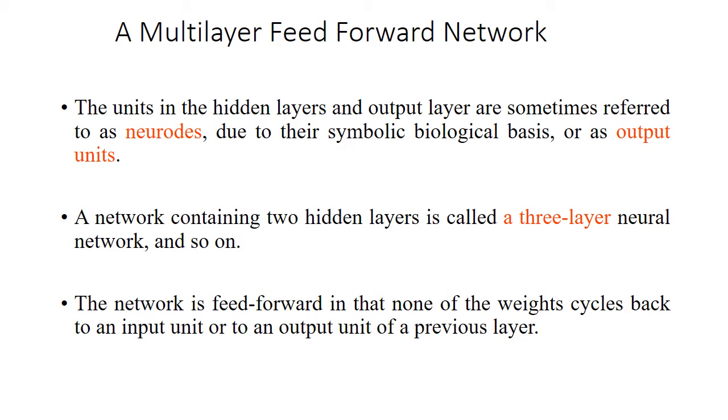A network containing two hidden layers is called a three-layer neural network. In the last class there was an input layer, an output layer, and no hidden layer in the perceptron. But here if we take two hidden layers then it becomes a three-layer neural network. If there are three hidden layers then it becomes a four-layer neural network and so on.